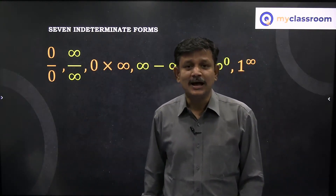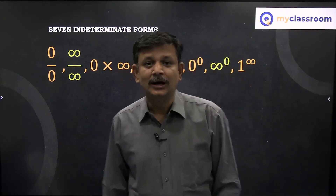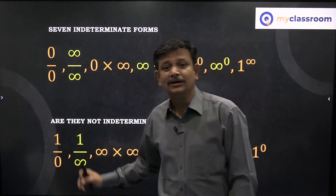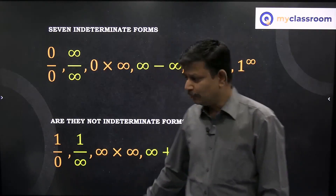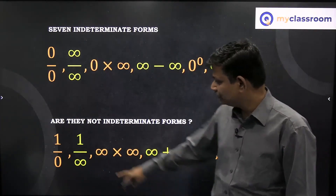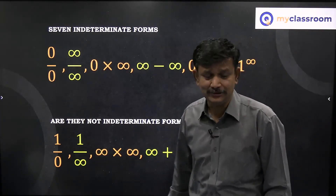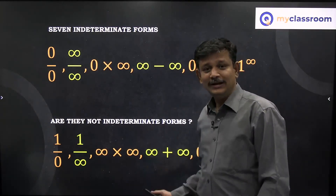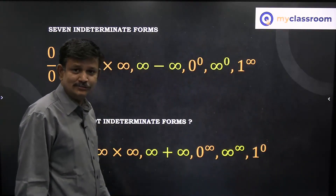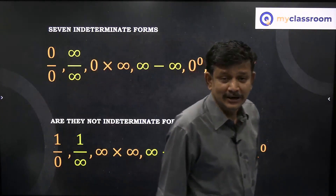Many students have a doubt: why are these indeterminate forms, and are these the only indeterminate forms? What about forms like 1 by 0 — is it not indeterminate? 1 by infinity — is it not indeterminate? Infinity into infinity, 1 power 0, infinity power infinity — are these not indeterminate?